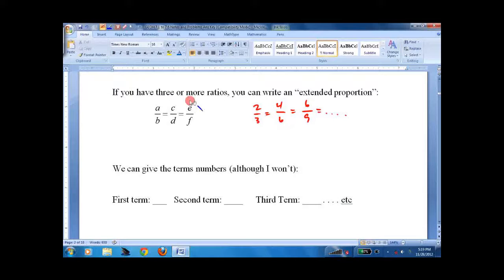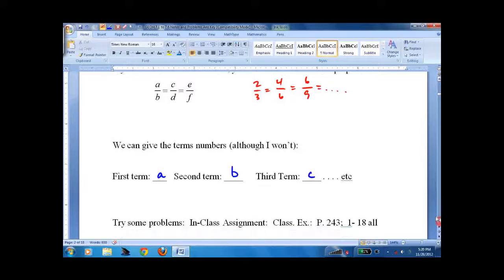And last but not least, we can label these items, terms, in the proportion. I'm never going to do this, but just so you're aware, the first term is A, second term is B, third term is C, fourth term would be D, and so on. That's it.